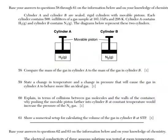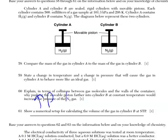For question 60, it says explain in terms of collisions between gas molecules and the walls of the container. Whenever you see, explain in terms of, make sure you have that in your answer. It says why pushing the movable piston farther into cylinder B at constant temp would increase the pressure. Increasing the pressure is going to decrease the volume of the gas. If we're decreasing the volume of the gas, we're increasing the number of collisions between the gas molecules and the walls of the container. For 60. For 61, here we are again with a numerical setup.